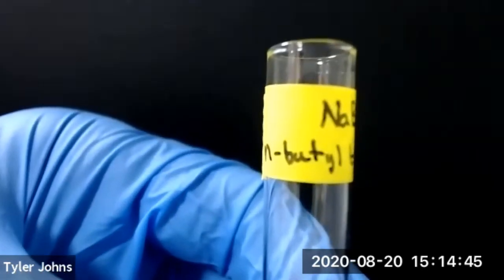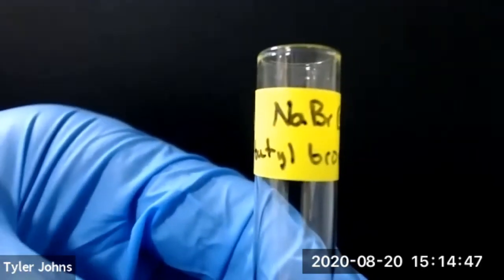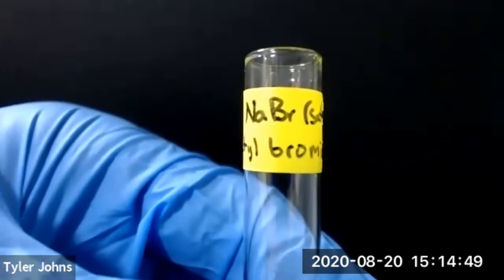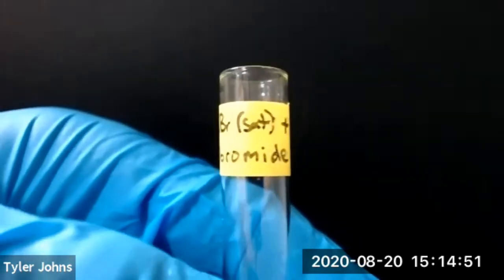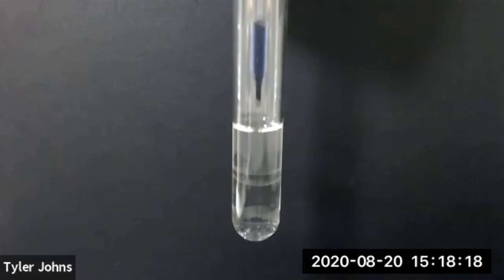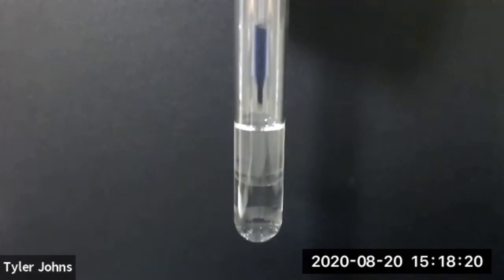Our third test tube contains N-butyl bromide and saturated aqueous sodium bromide. We'll now add several drops of water to our saturated aqueous sodium bromide and N-butyl bromide.